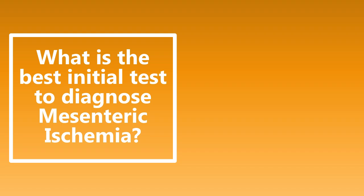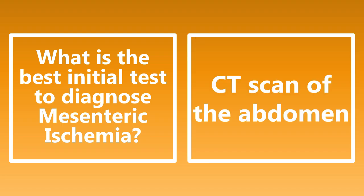What is the best initial test to diagnose mesenteric ischemia? This is going to be a CT scan of the abdomen. On the CT scan, you might see some bowel wall edema or air within the bowel wall, which is abnormal and can be a sign of mesenteric ischemia. X-ray can also be used, but it's not as good a test. The best initial test to diagnose mesenteric ischemia is a CT scan of the abdomen.